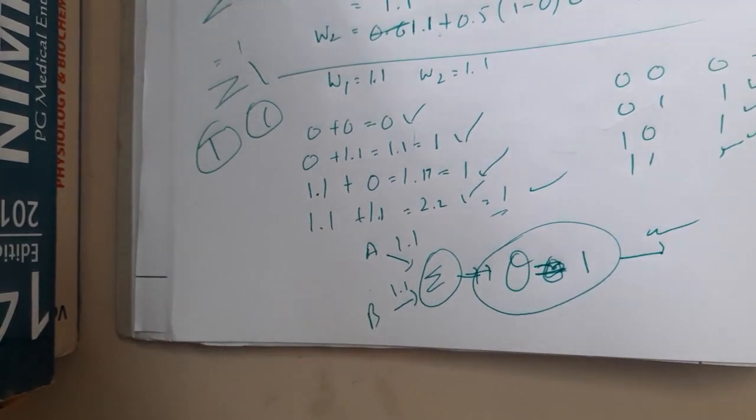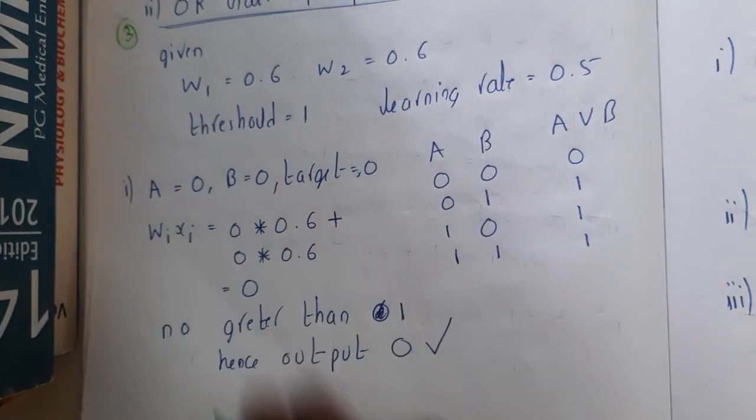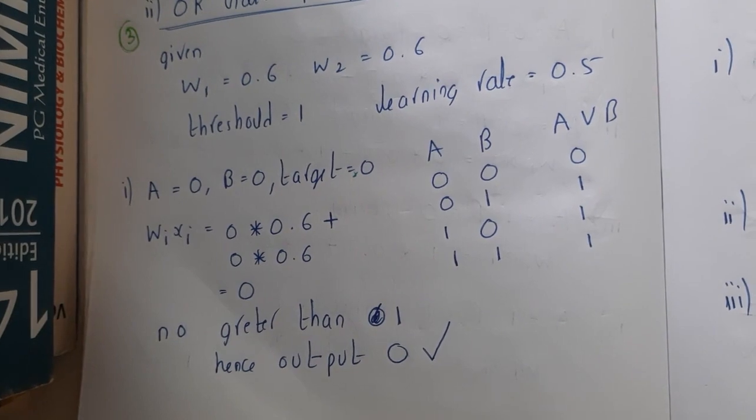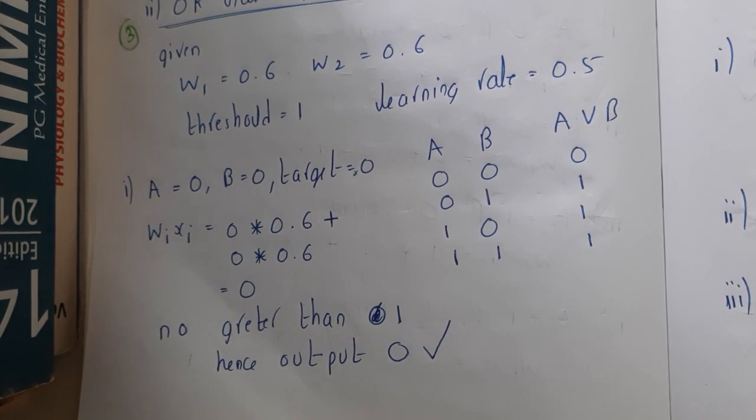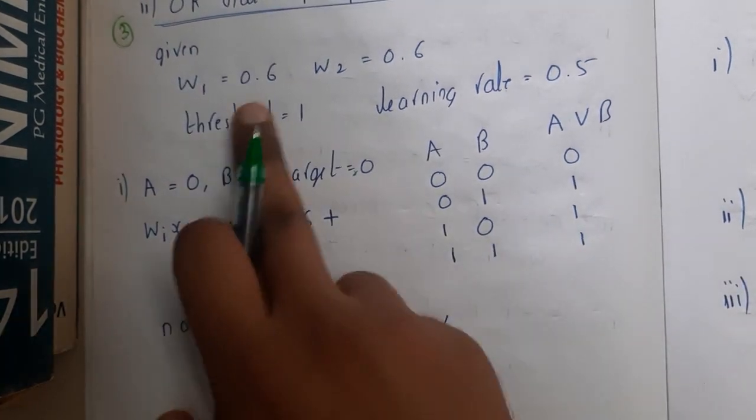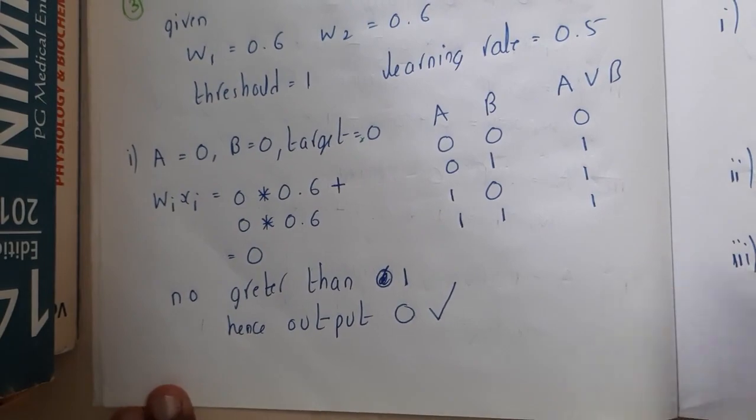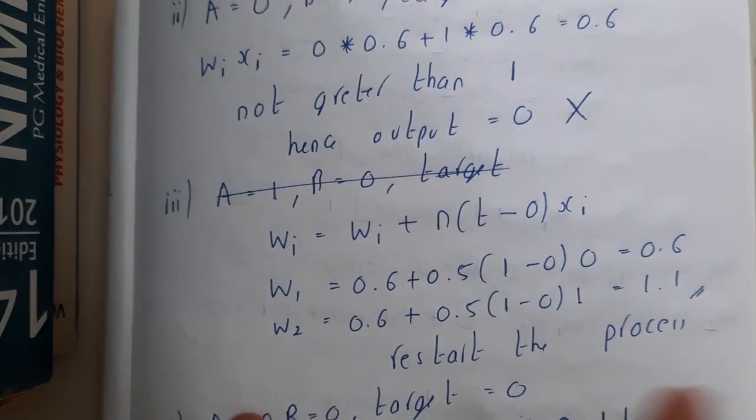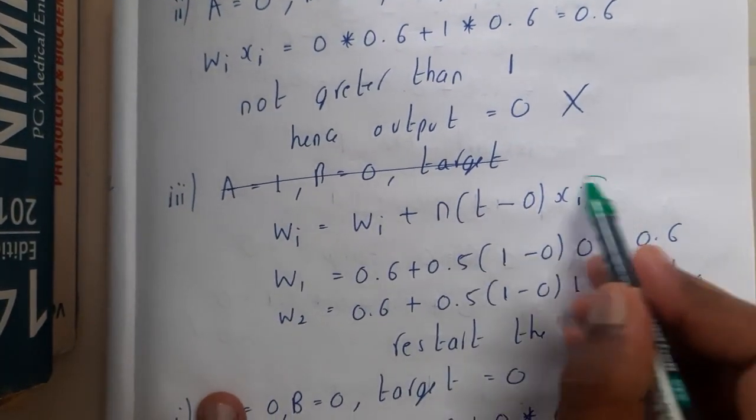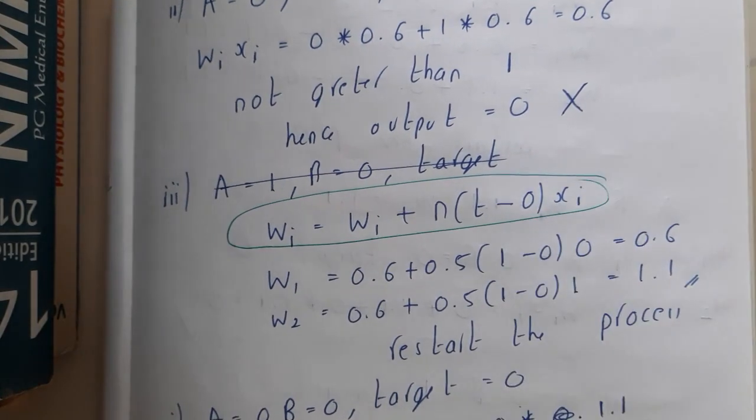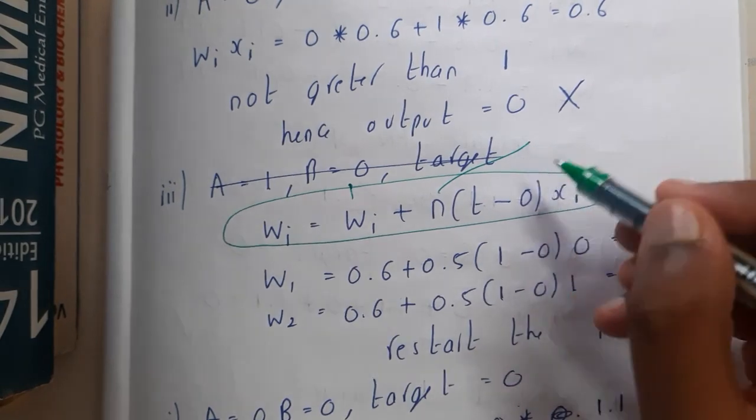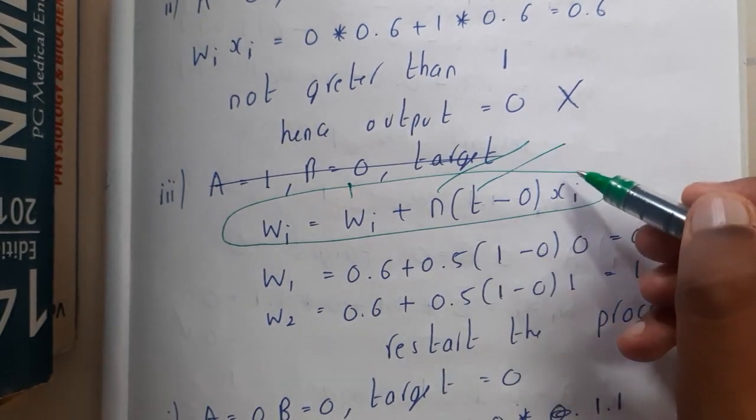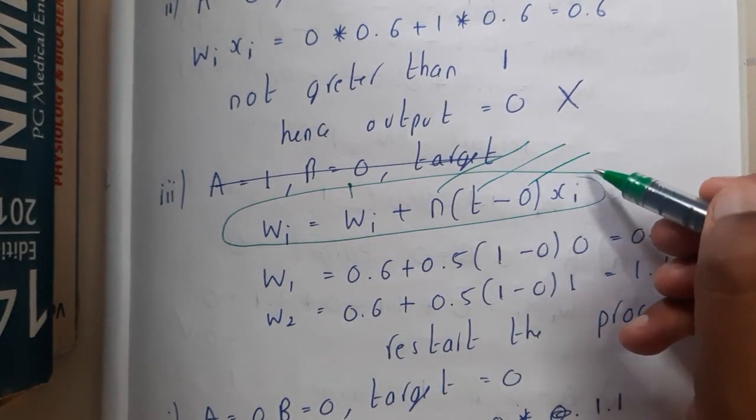In the book it is written step by step. I went a bit fast because I don't want to waste your time since you watched the previous lecture. The same method is written step by step in the notes. Please don't forget the formula: Wi is your particular weight, n is your learning rate, t is your expected output, o is your current output, and xi is your input.